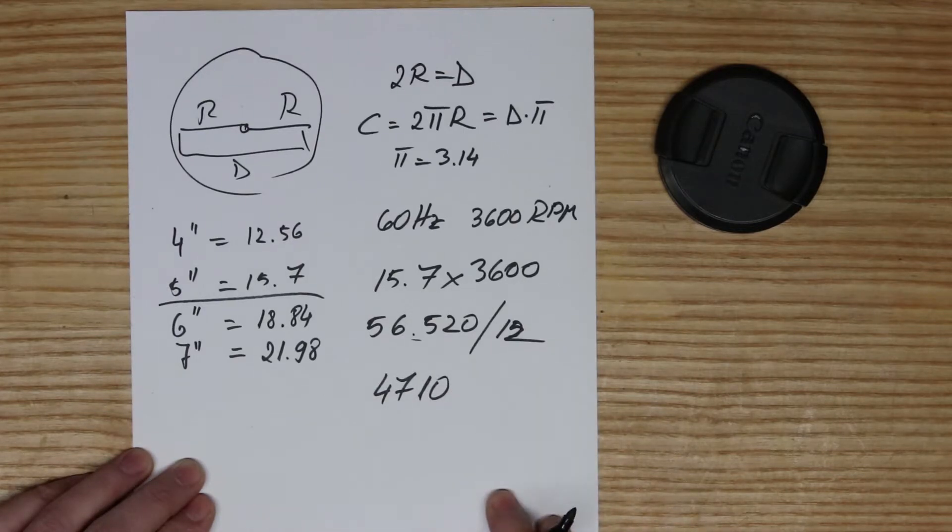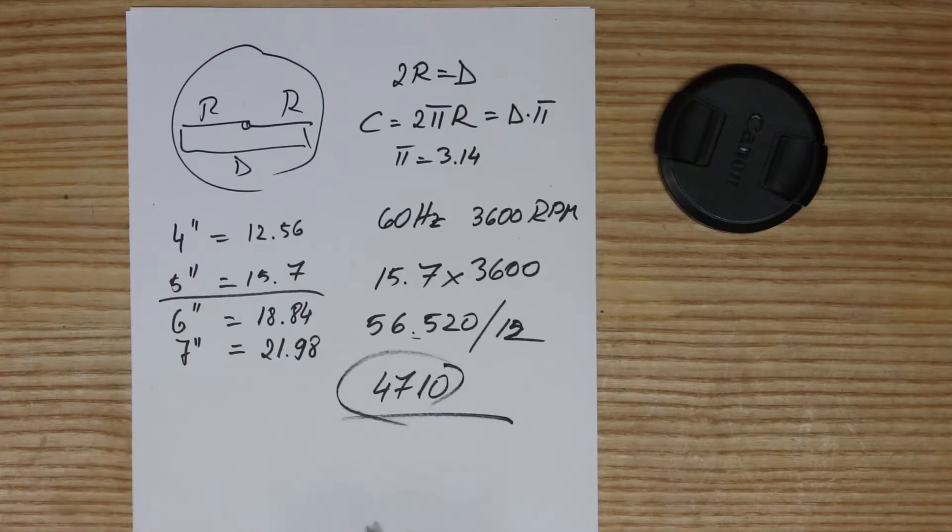At maximum speed, 3,600 RPM, the surface feet per minute for this particular setup with a 3,600 RPM motor and a five inch drive wheel is 47.10.